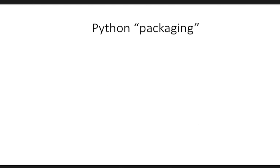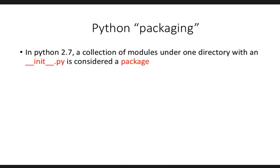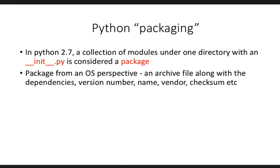In Python 2.7, anything with an __init__ in it is considered a package. But a package from your operating system's perspective is something different. In Linux or Unix-based systems, you have the idea of having several packages come together to form executable programs. In Windows and Macs you have everything bundled together, but Linux-based systems tend to prefer modularity. A package from an operating system's perspective is an archive file along with all the dependencies, version number, and checksum it requires to register itself with the package manager.